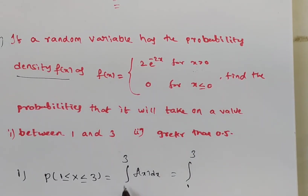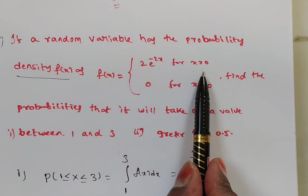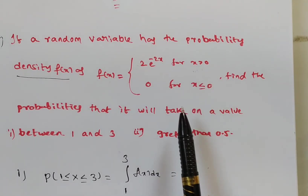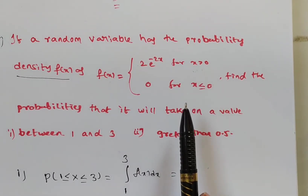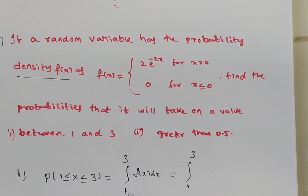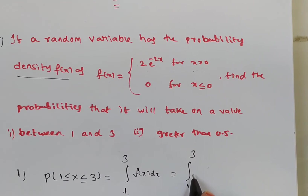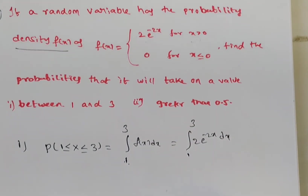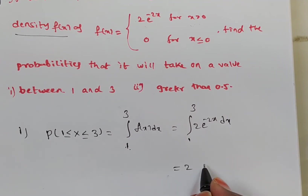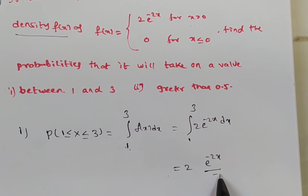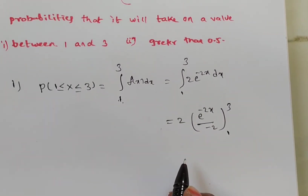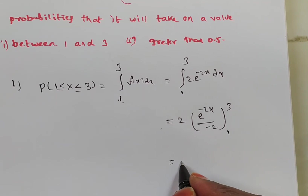From 1 to 3, since x is greater than 0, the function is 2e to the power of minus 2x. So the integral equals the integral from 1 to 3 of 2e^(-2x) dx. This equals 2 times e^(-2x) divided by minus 2, evaluated from limits 1 to 3. The 2s cancel, giving a negative sign.